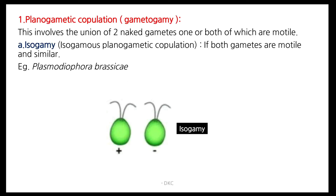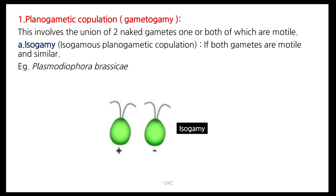First, planogametic copulation. This involves union of two naked gametes; one or both of the gametes are motile — meaning they can move from one place to another with the help of flagella. There are three types: isogamy, anisogamy, and heterogamy. Isogamy is a condition where both gametes are motile and similar in size and shape. This is present in Plasmoduophora brassicae.